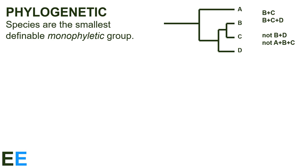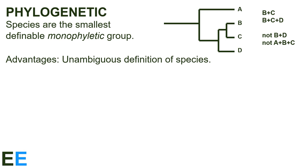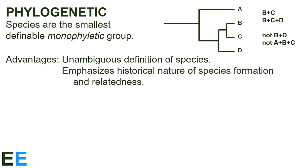The next species definition is called the phylogenetic species definition. In this definition, species are the smallest, definable, monophyletic groups. Recall that a monophyletic group is one defined by an ancestor and all its descendants. In the figure to the right, taxa B and C could define a monophyletic group if we include their ancestor. The set of B, C, and D could also define a monophyletic group if we include their ancestor. However, we couldn't use taxa B and D but not include taxa C to describe a monophyletic group. This definition has several advantages. First, if we can make accurate phylogenies, this provides an unambiguous method to define what a species is. Second, this definition emphasizes the historical nature of species formation and relatedness — it's always good when the definitions we use remind us of the process going on. In contrast to the typological definition, which practically forces people to ignore evolution as the explanation for why species exist, this definition keeps it front and center.